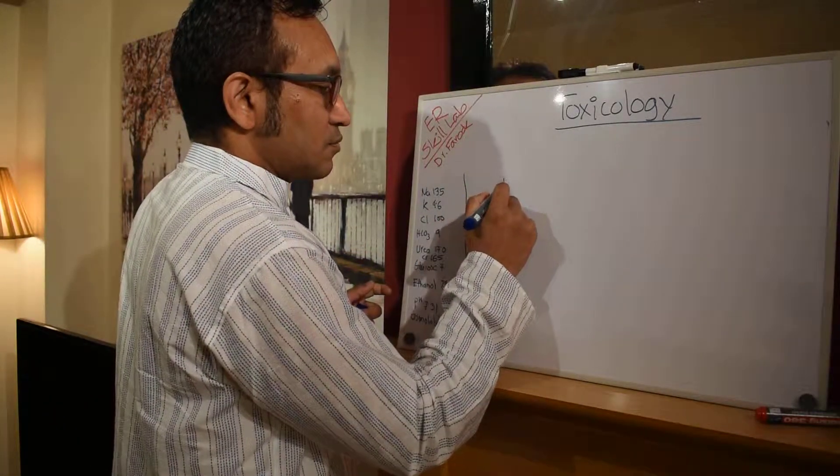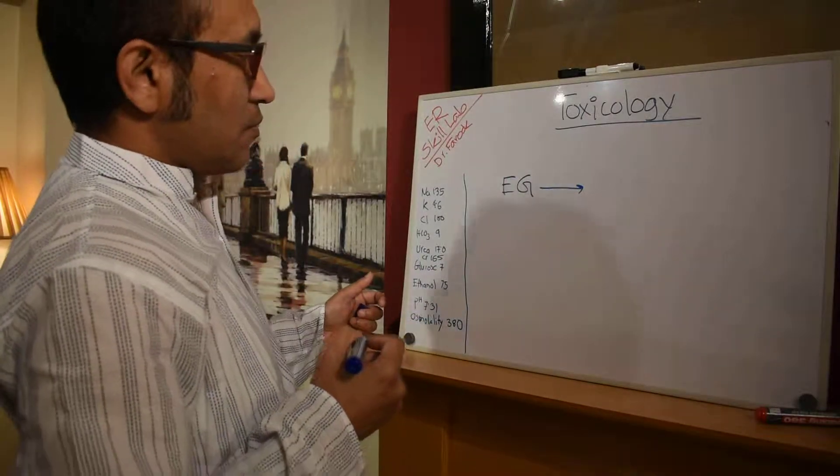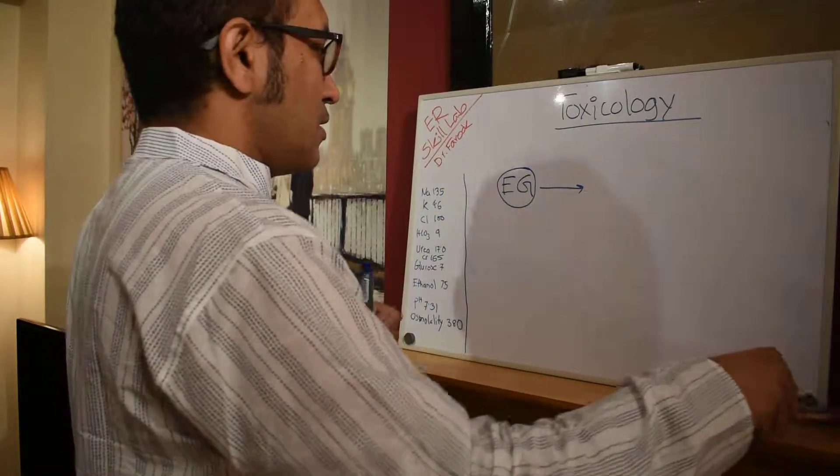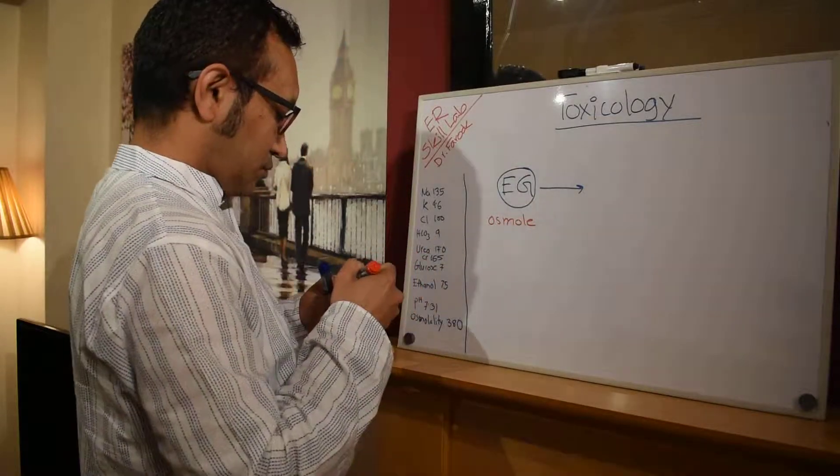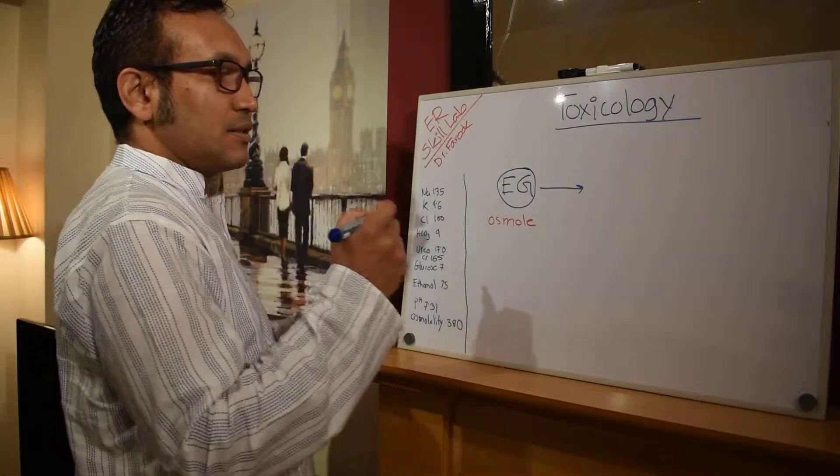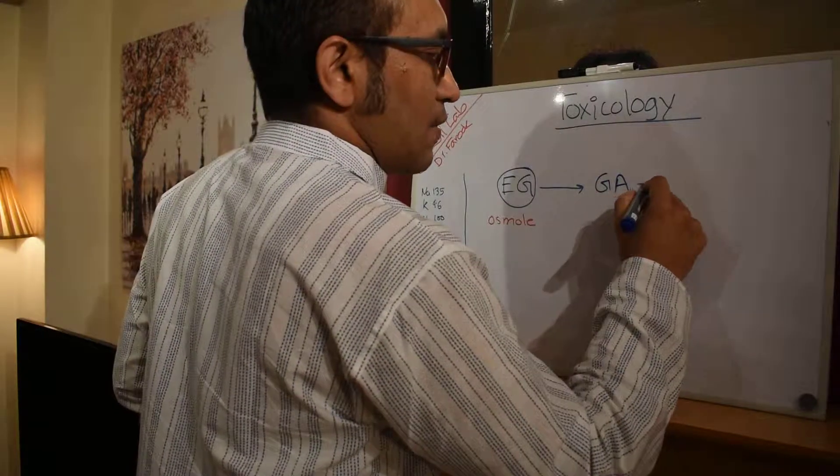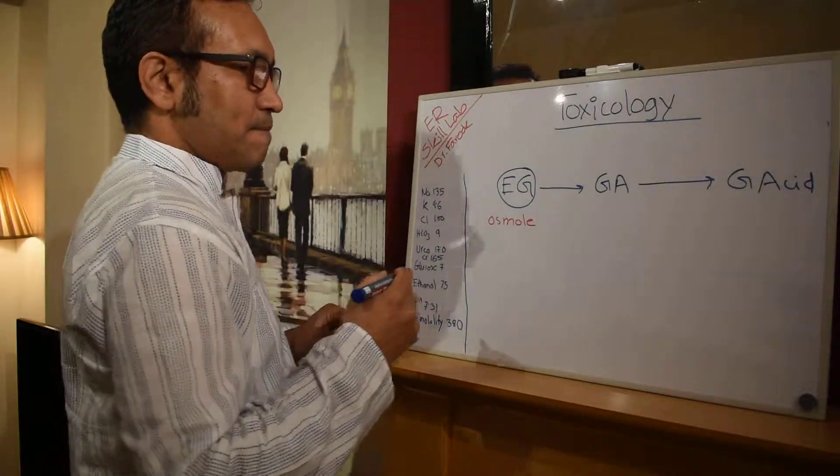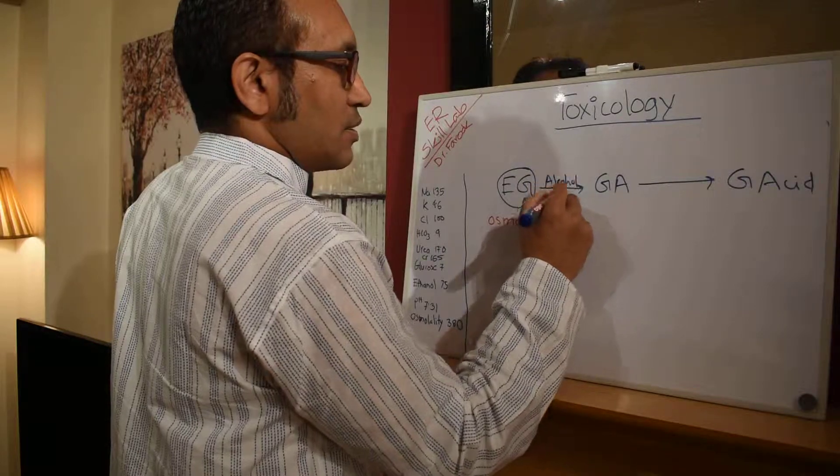So for ethylene glycol, ethylene glycol is an osmol. Two things we need to know: this is an osmol which can become an anion later. So ethylene glycol becomes glycolaldehyde and then later becomes glycoxylic acid. The enzyme that helps this conversion is alcohol dehydrogenase.